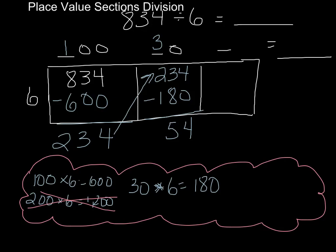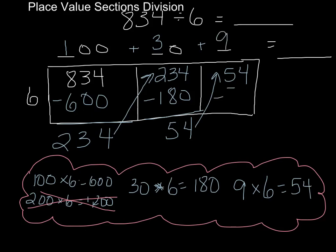Now I can still make groups of six out of that as well. So so far I've got 100 groups of six plus 30 groups of six. Now let's see how many groups of six are there in 54. Good news — I know this one, it's a math fact, because nine times six is 54. So I can make nine more groups of six, which means I have everything in groups of sixes, which is what I was going for.